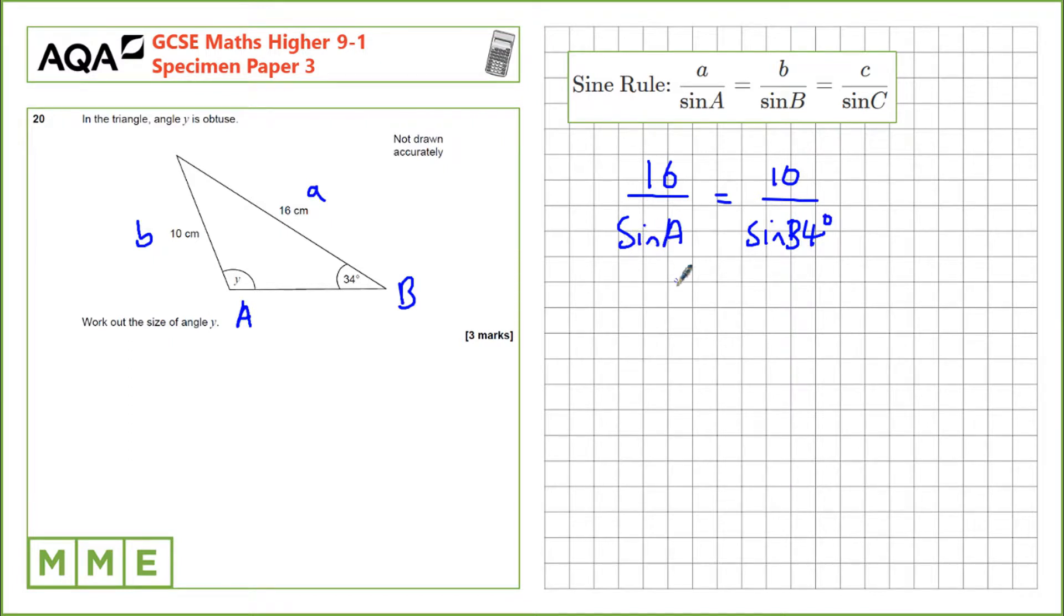If you want to calculate the sine of A, the first thing we can do is to rearrange by multiplying by the sine of A. That would be 16 equals sine A times 10 over sine 34.